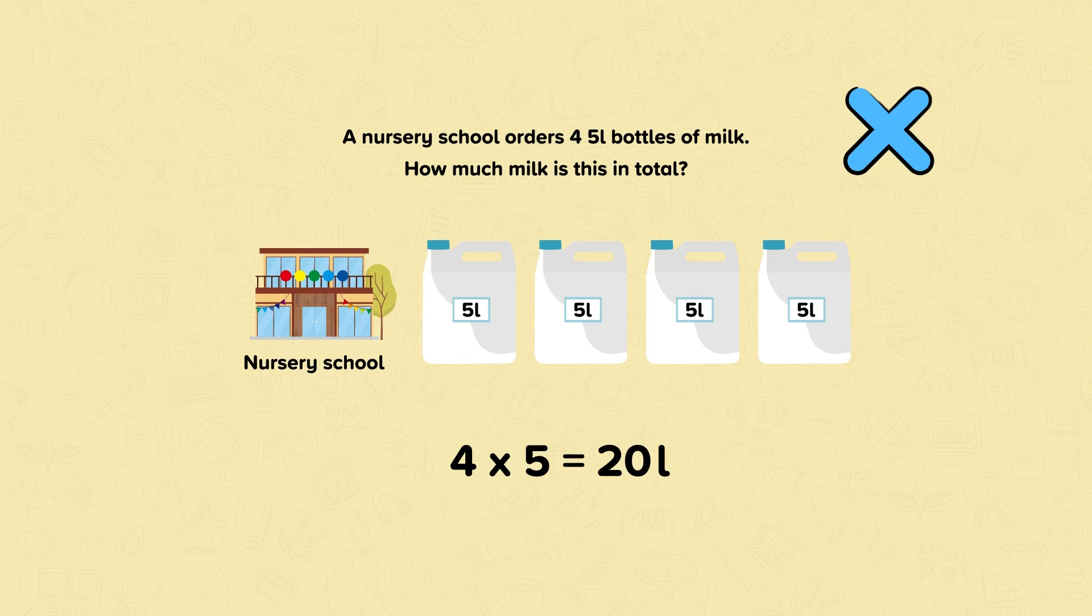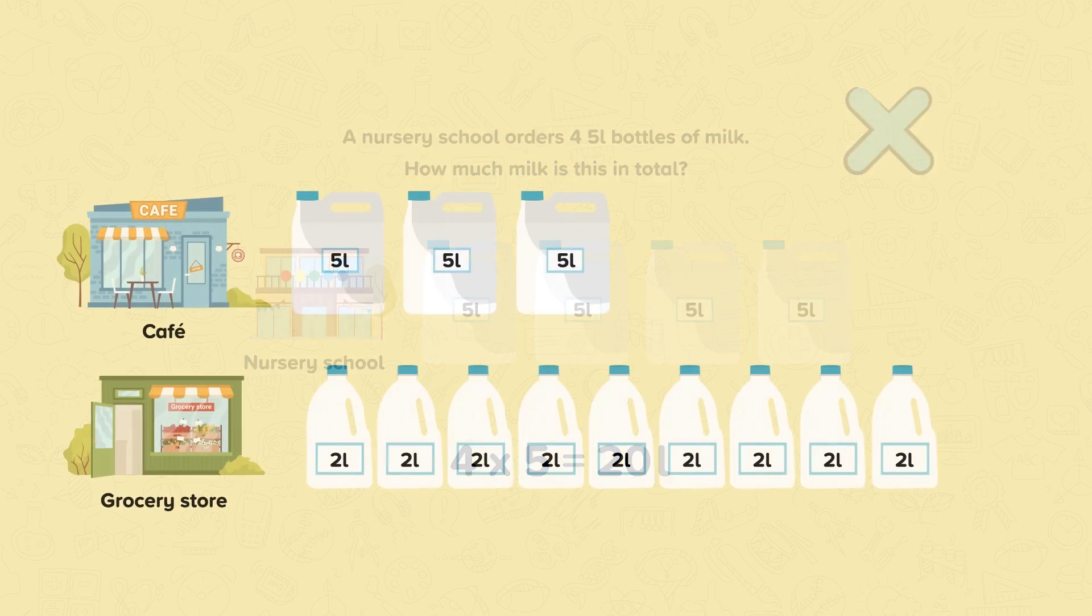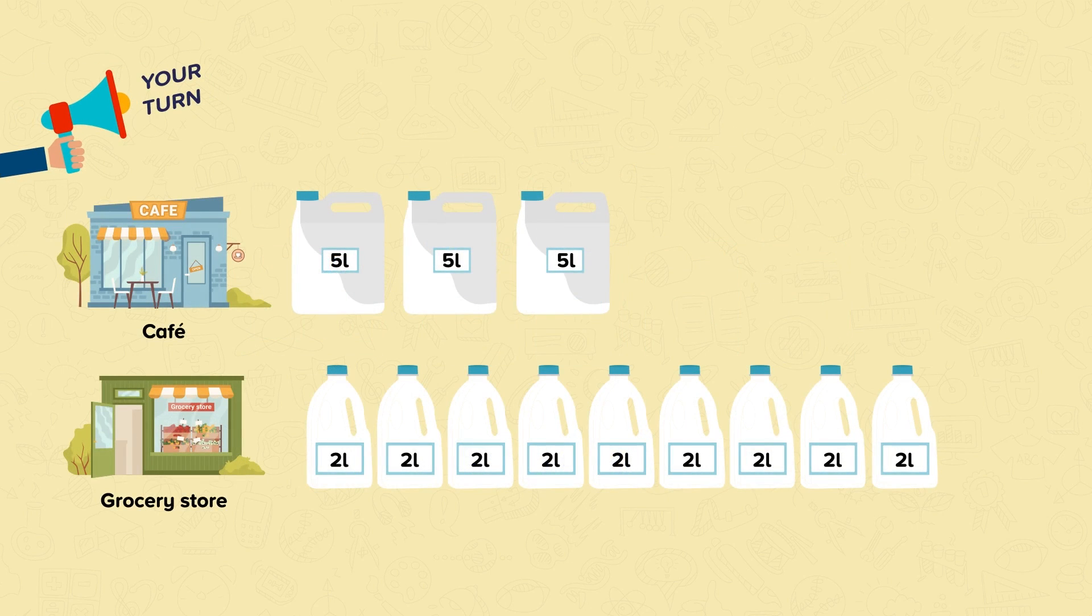So the nursery orders 20 liters of milk a week. Remember we must make sure that we include liters in our answer. Just 20 would be incorrect. Now it's your turn to work out how much milk the cafe and the grocery store have ordered in total. Pause the video and have a go.